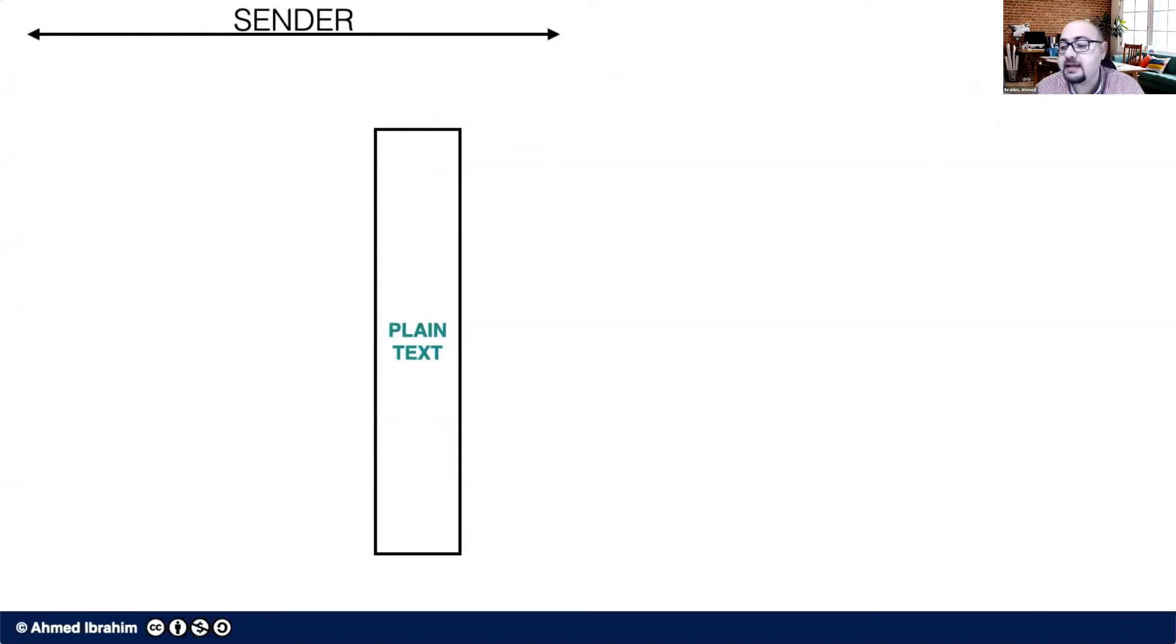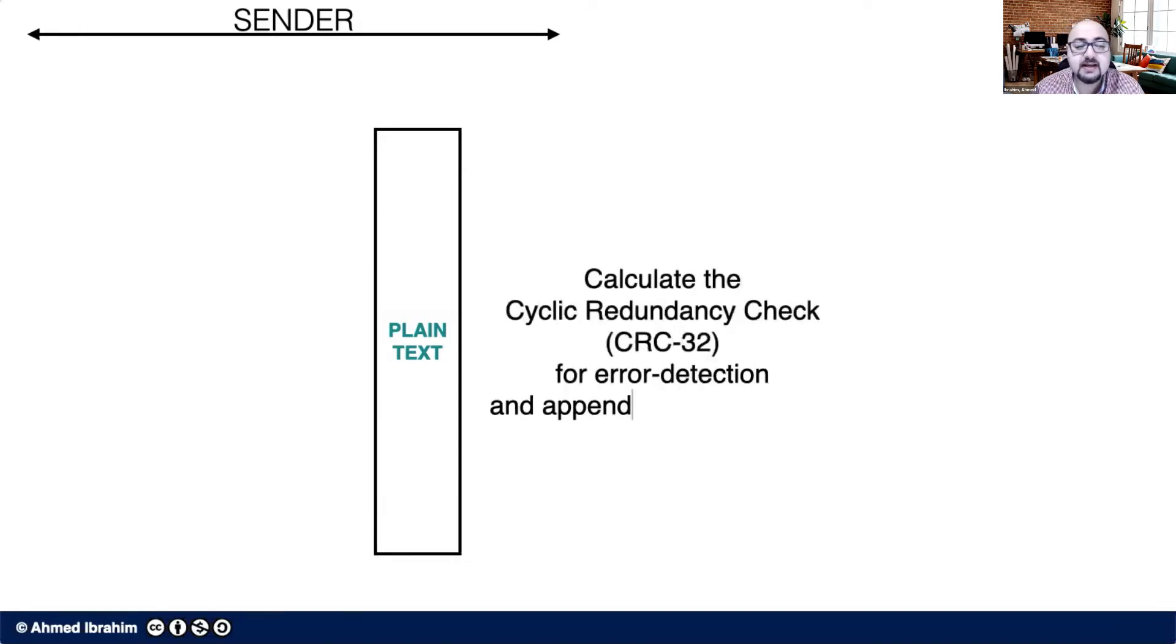The first thing that happens in WEP is that it calculates something called the CRC, the Cyclic Redundancy Check. It's like an integrity check. You can think of it the same as you think of a hash function. It is mainly for error detection.